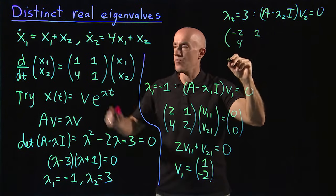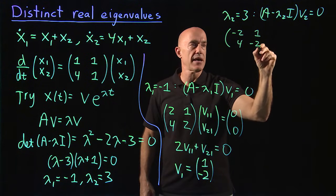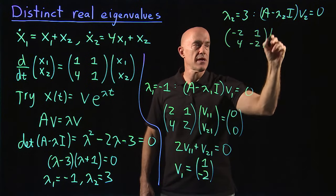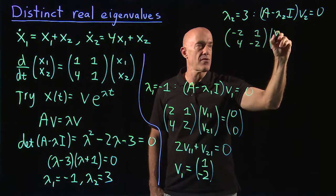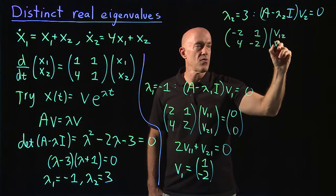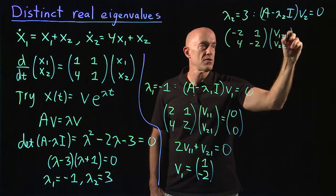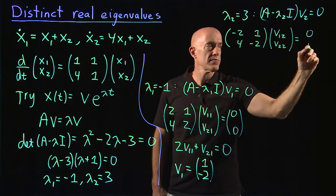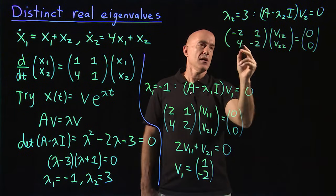And 4, 1 minus 3 again, is minus 2 times v₂. Here I'll write that as row 1, column 2, row 2, column 2 equals 0.